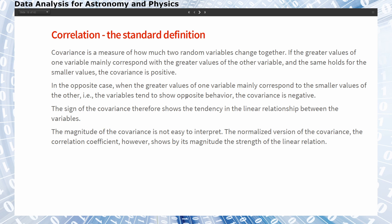In contrast to the correlation coefficient, the covariance is not limited to plus and minus one, and its magnitude is not easy to interpret. The normalized version — the correlation coefficient — shows by its magnitude the strength of the linear relationship.